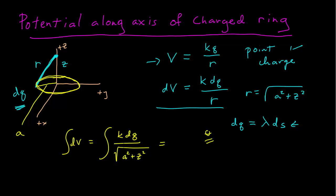K, of course, is a constant, it doesn't. Well, Z is the same for every element dQ, whether you're here or whether you're over here. Distance Z is the same, as is the distance A.